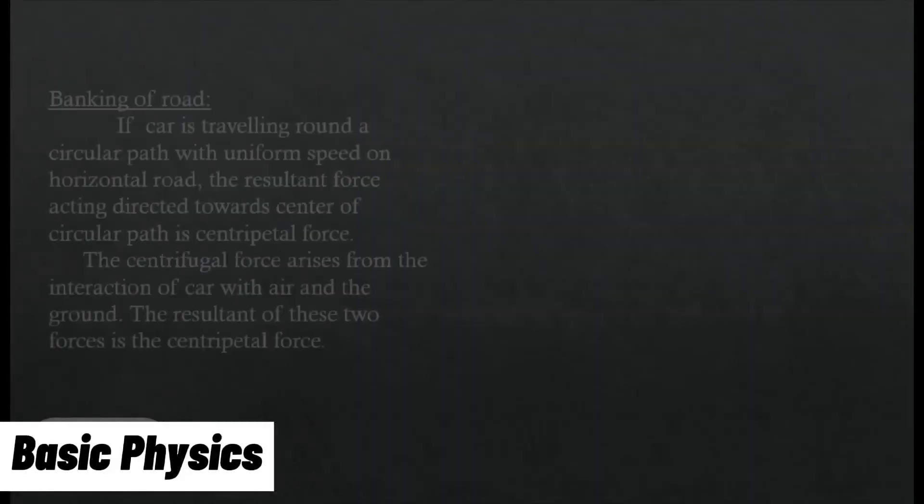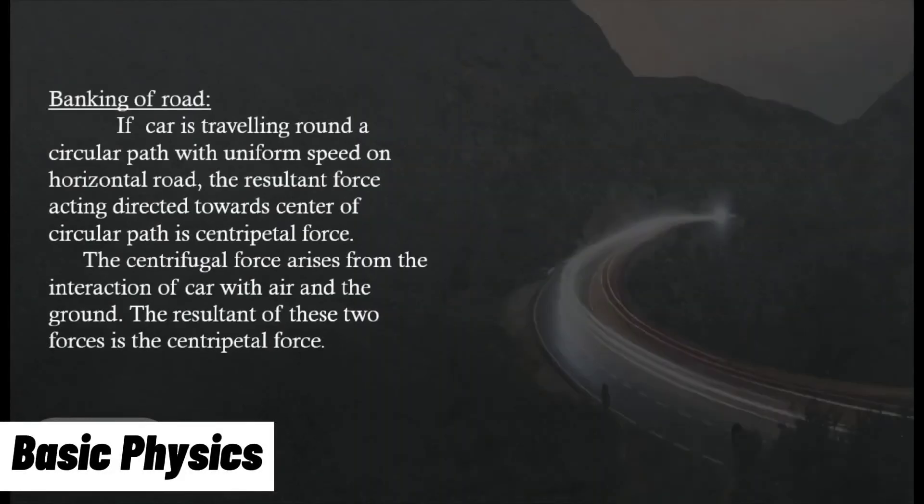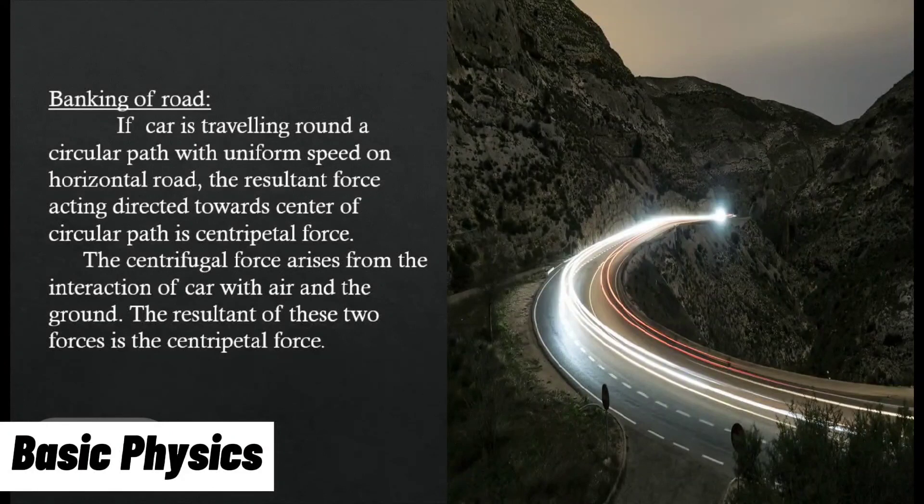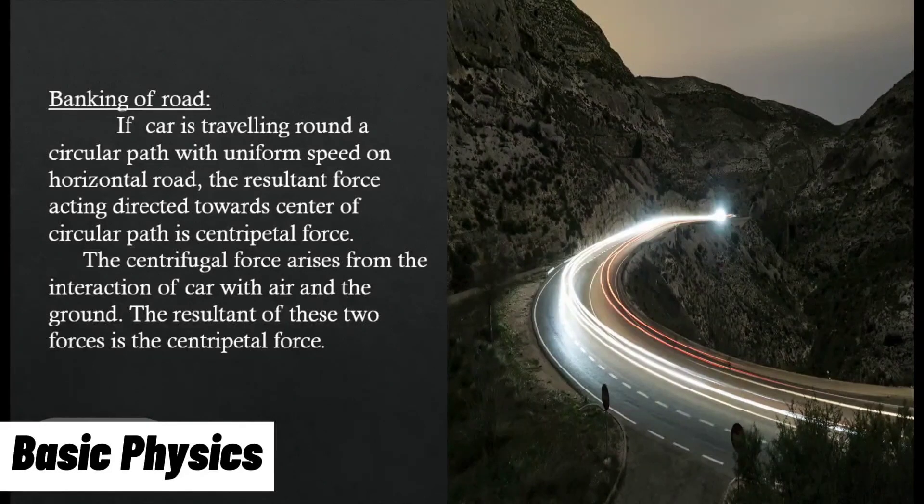Banking of road: If a car is traveling round a circular path with uniform speed on horizontal road, the resultant force acting directed towards center of circular path is centripetal force. The centrifugal force arises from the interaction of car with air and the ground. The resultant of these two forces is the centripetal force.